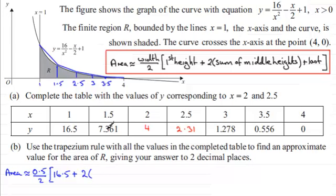Then we add twice the sum of all the middle heights. Okay. That's the 7.361, plus the 4, plus 2.31, plus 1.278, plus the 0.55. So that's twice the sum then of all the middle heights.